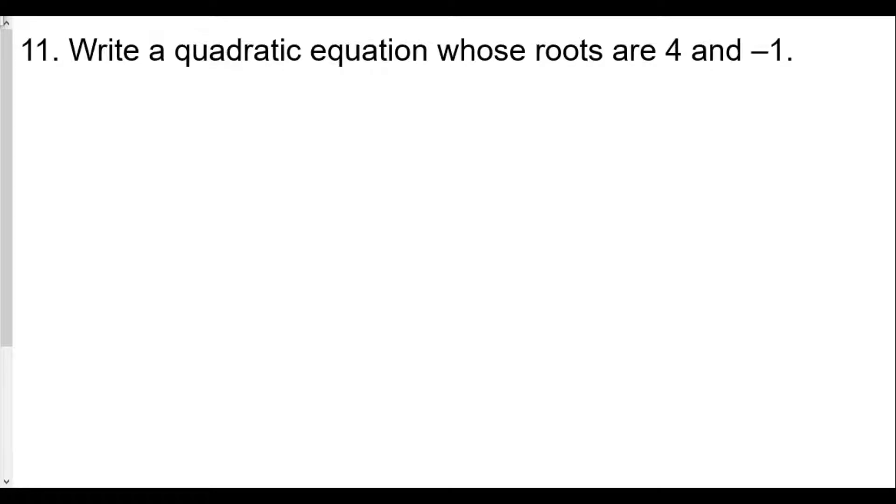Of the roots right so we're going to take the sum of the roots. Sum of the roots we know is negative b over a and therefore 4 plus negative 1 is 3 so negative b over a is 3 over 1.